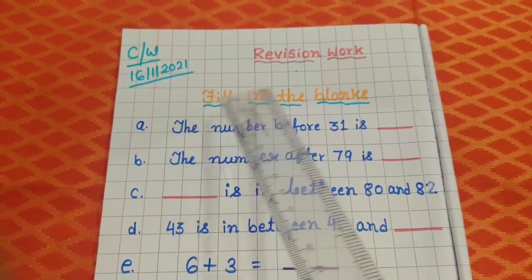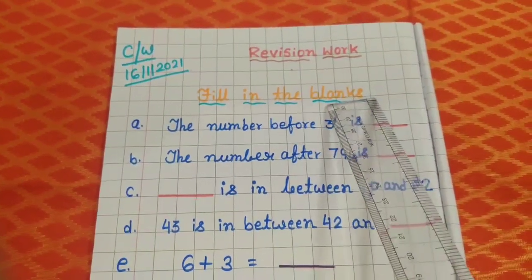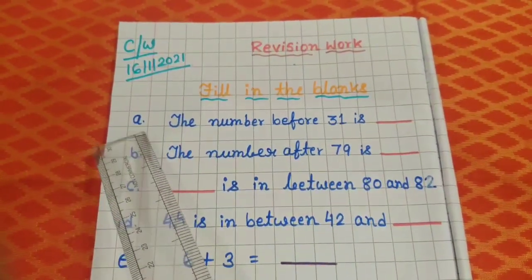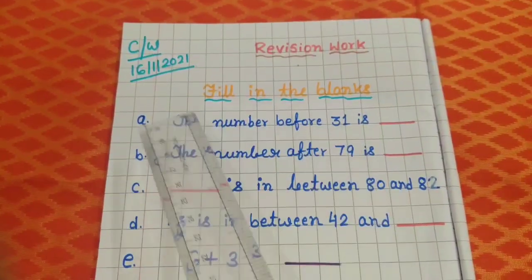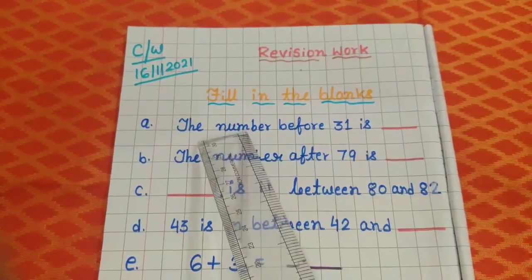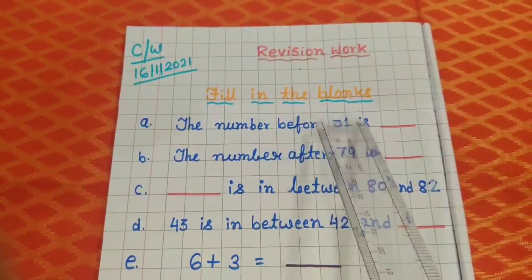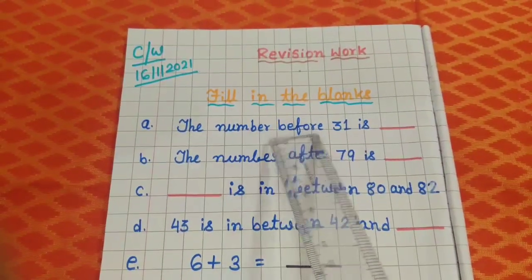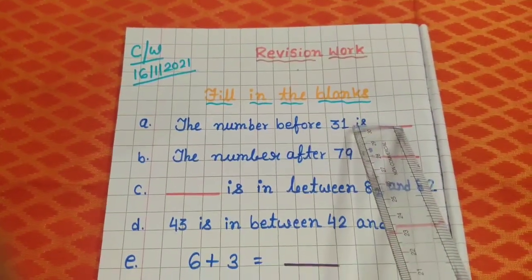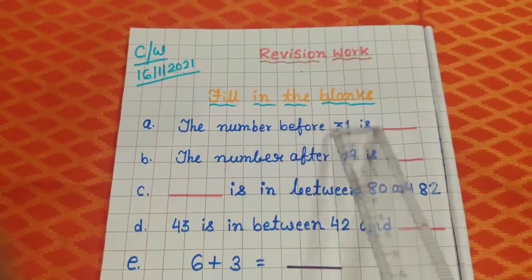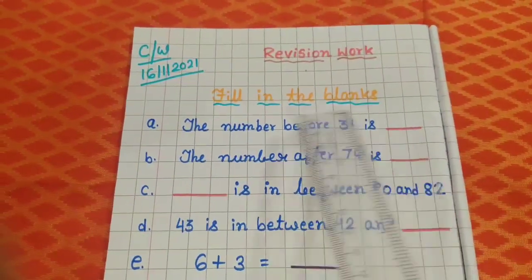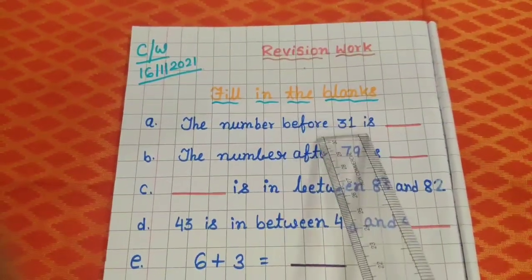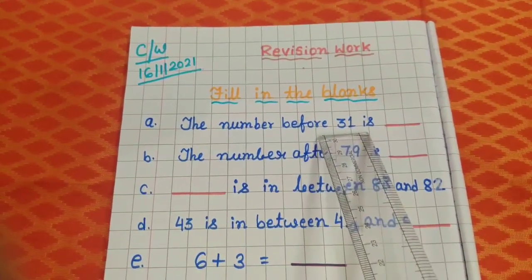Number A. Here I have written, the number before 31 is dash. So you have to write here what comes before 31. Understood?